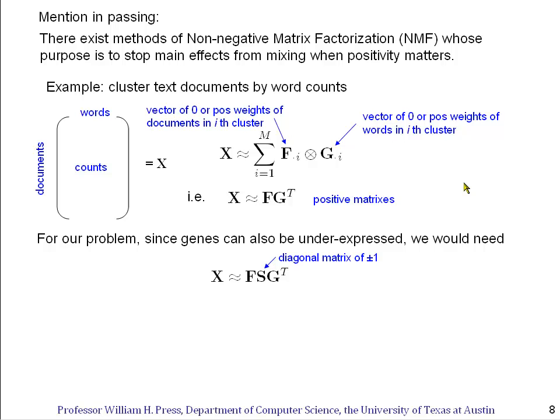Now for our problem, genes can be overexpressed or underexpressed. So if we wanted to use a variant of non-negative matrix factorization with positive matrices, we'd actually have to put in an additional diagonal matrix, maybe with just plus or minus ones along it. And so the positivity would be imposed on F and G, but not on the diagonal matrix.